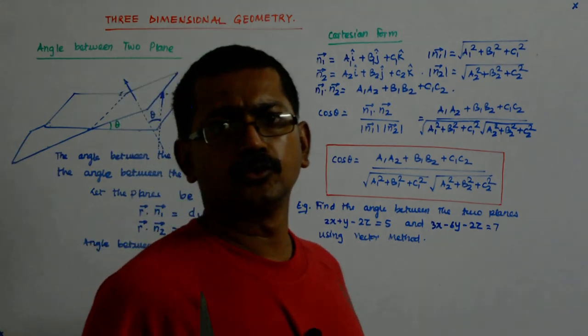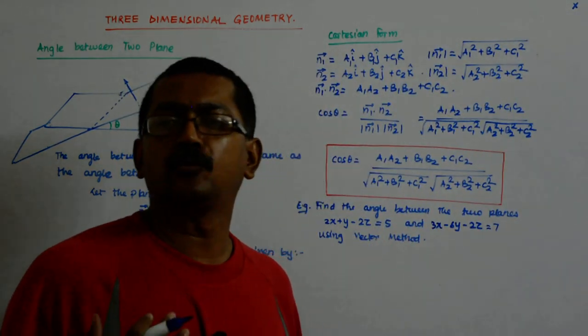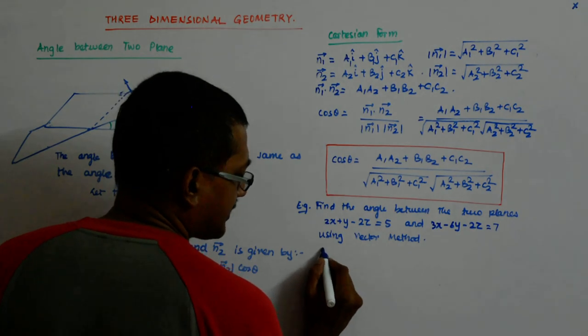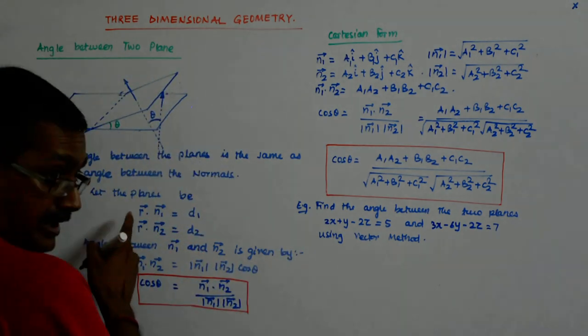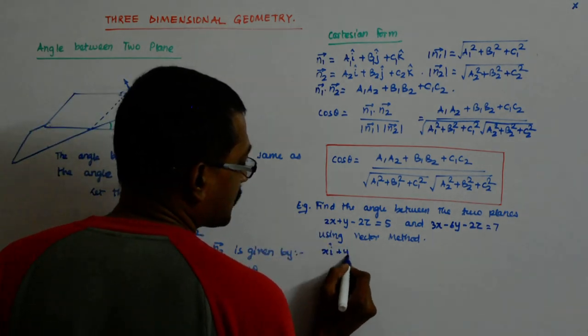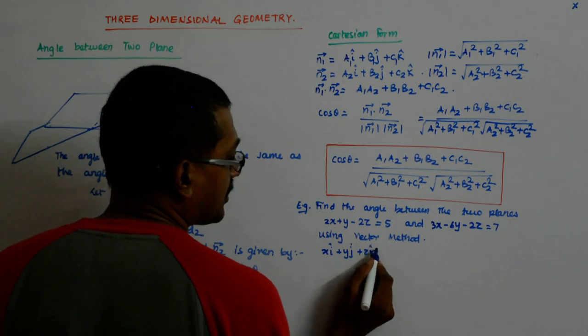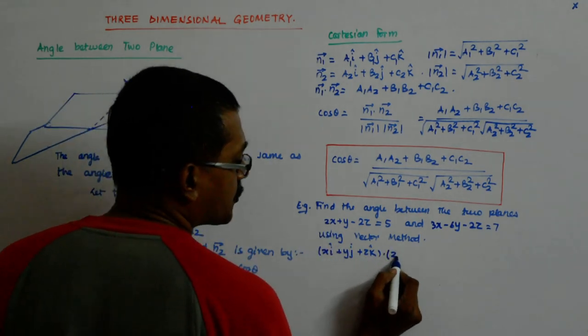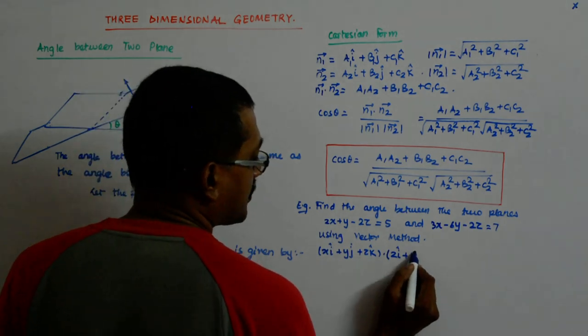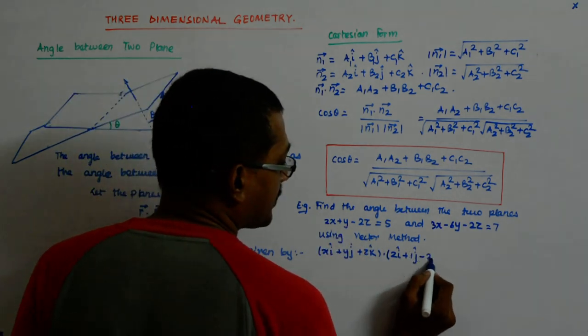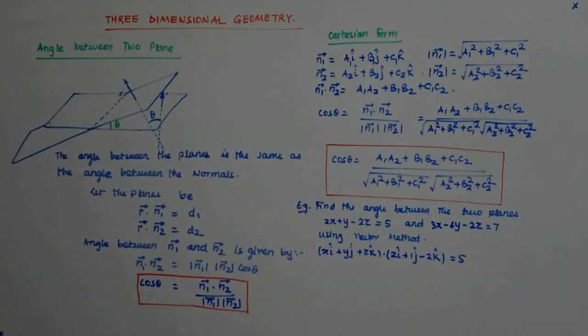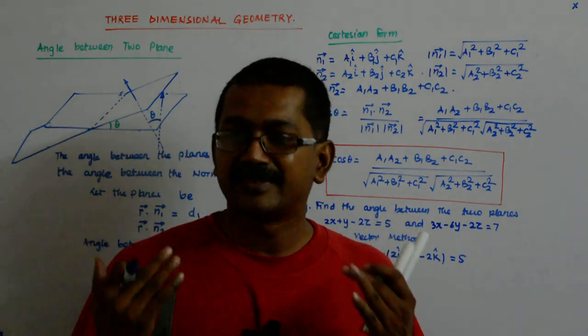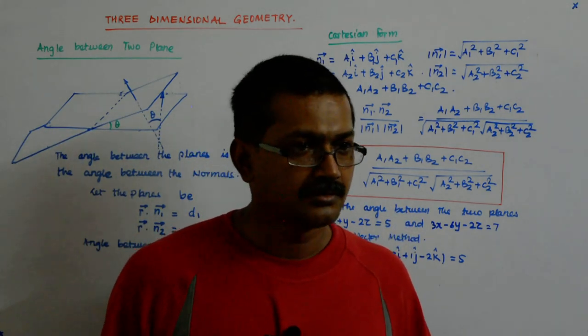Now, the moment they tell you to use the vector method, you will have to find out the n1 vector. What is the n1 vector? How can I resolve this? See, I have to convert it into this form, right? What is my x i cap plus y j cap plus z k cap? This is my r vector, r vector is fixed. Now I dot it with what? To get 2x, it should be 2i cap. To get 1y, it should be 1j cap. To get minus 2z, it should be minus 2k cap is equal to 5. So immediately from the Cartesian equation of a plane, we are able to extract the vector that represents the normal.